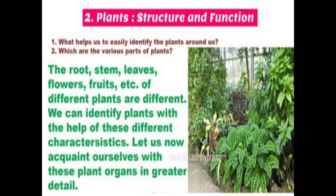Let's recall with two questions. First: what helps us to easily identify the plants around us? Second: which are the various parts of a plant? The first question means how do we identify plants around us, and the second asks about the various parts of plants. On the basis of this we can say that roots, stems, leaves, flowers, and fruit of different plants are different.